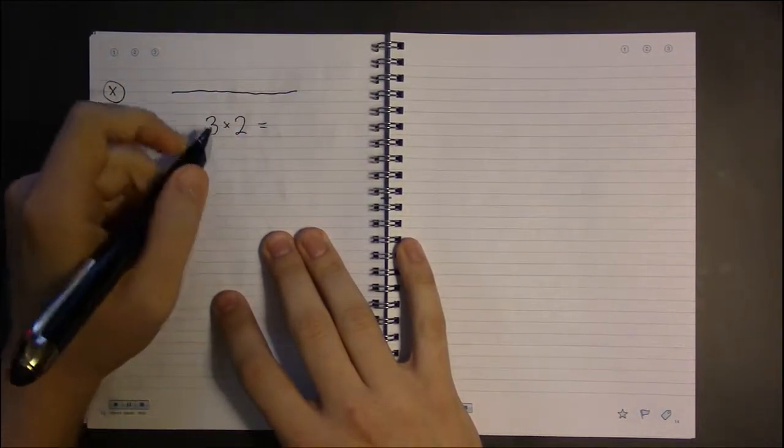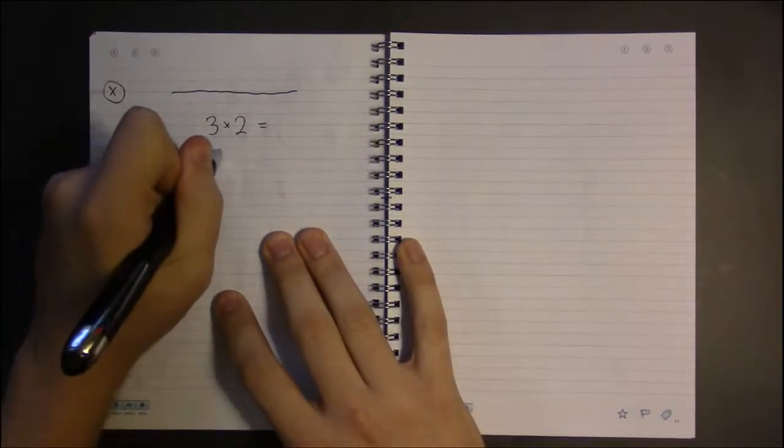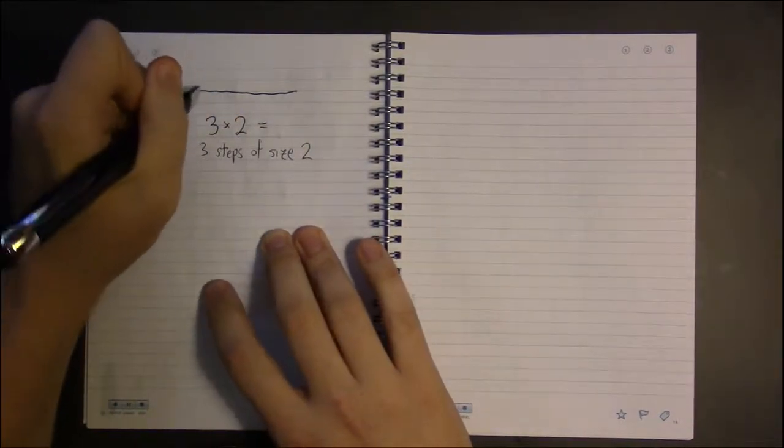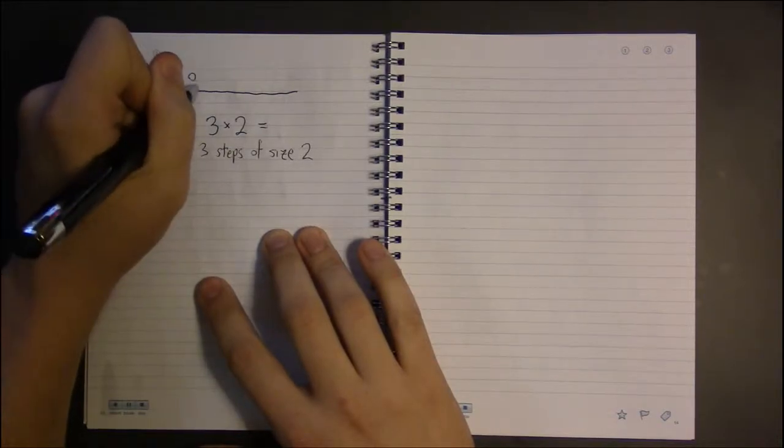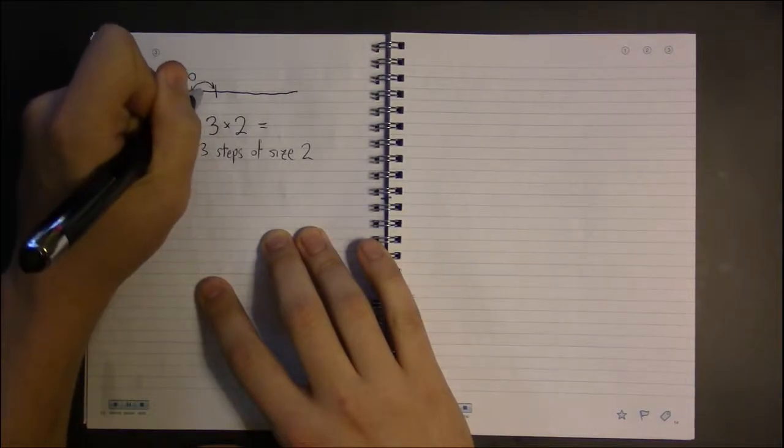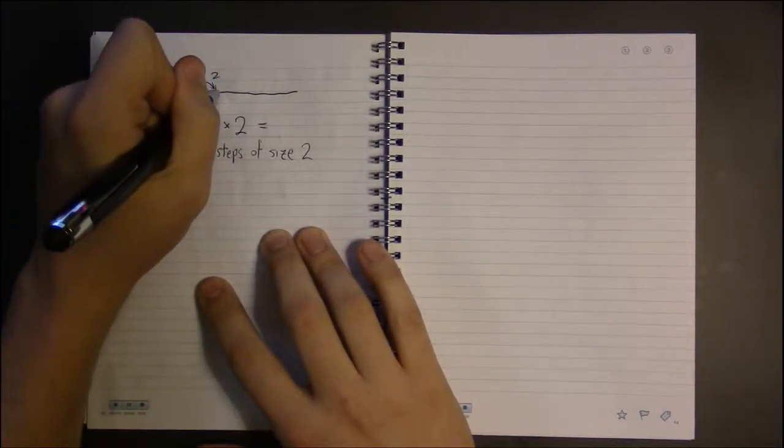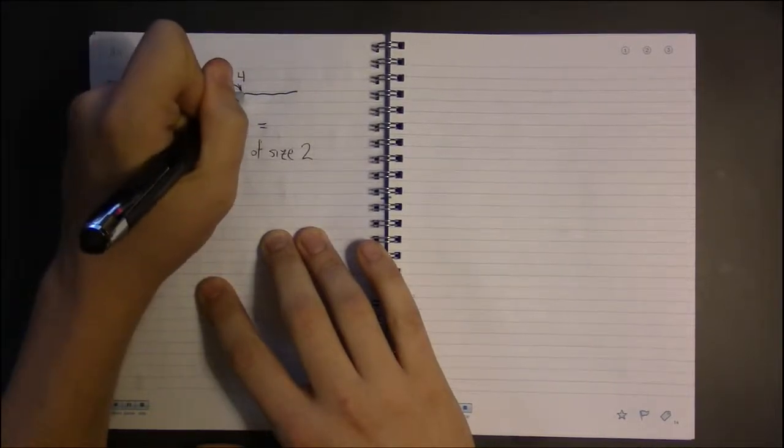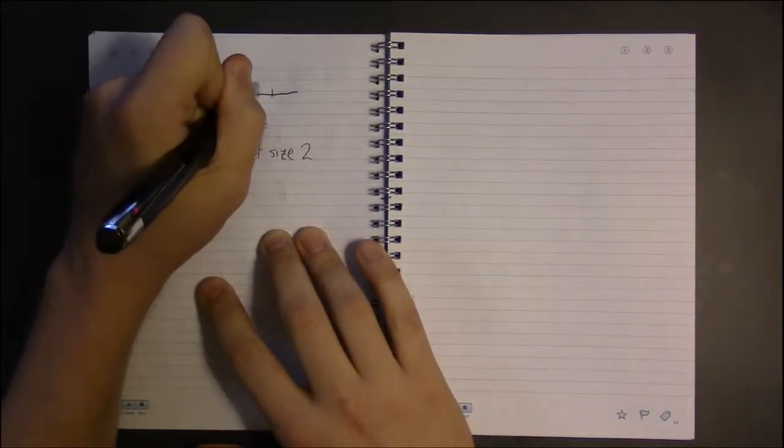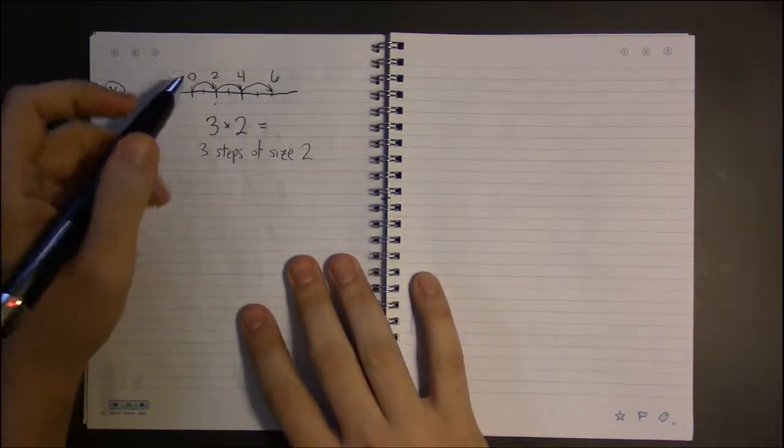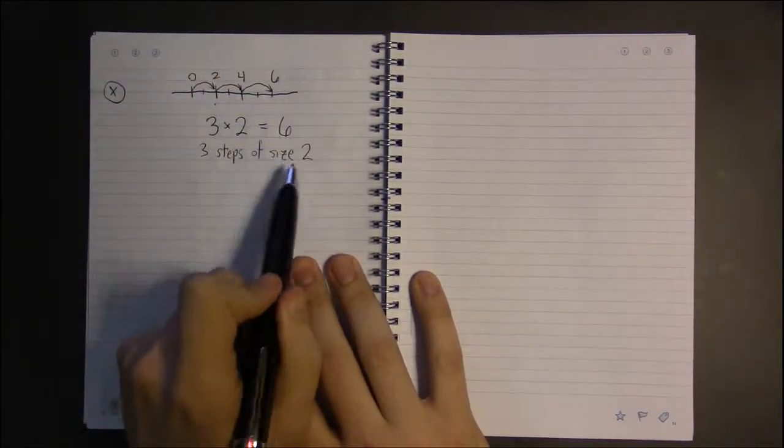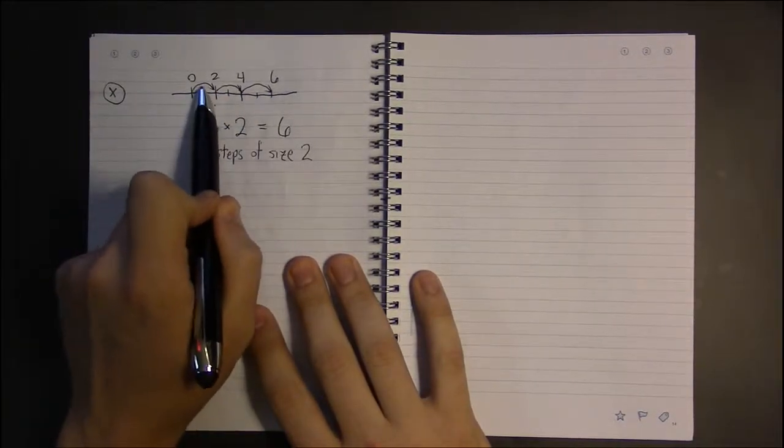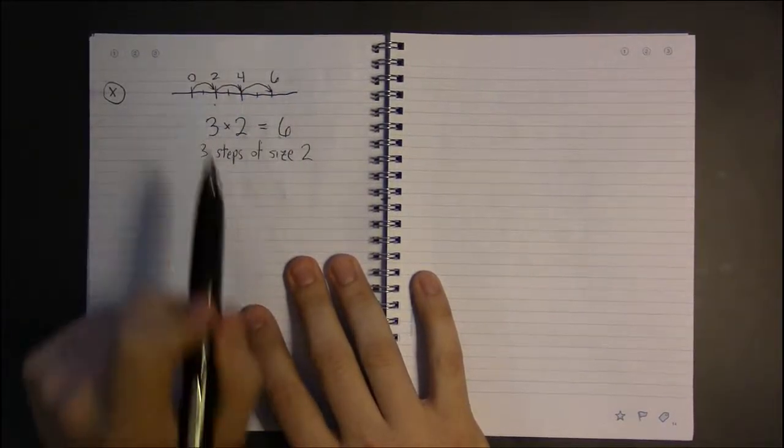Think about 3 times 2 as doing 3 steps of size 2. So, starting at 0 again, 1 step of 2 is going to land us on 2. We'll skip over 3 to step 2, 4. And then once more, skip over 5 to land on 6. We hit 6. So, taking 3 steps of size 2, or 3 2 steps, lands us 6 away from 0.